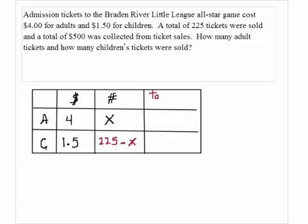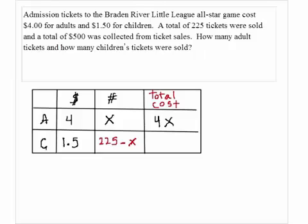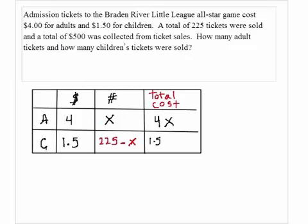We want to find the total cost. If we sold X tickets for the adults and each is worth $4, the total cost for adults would be 4X. For the children's tickets, each sold for $1.50 and we sold 225 minus X of them, so the total cost for children would be 1.5 times (225 minus X).